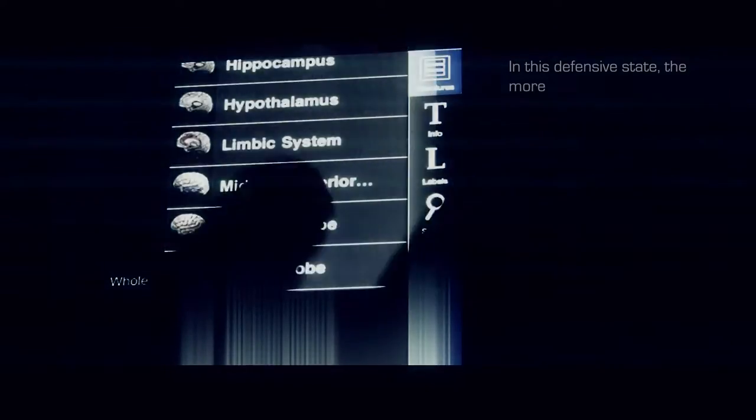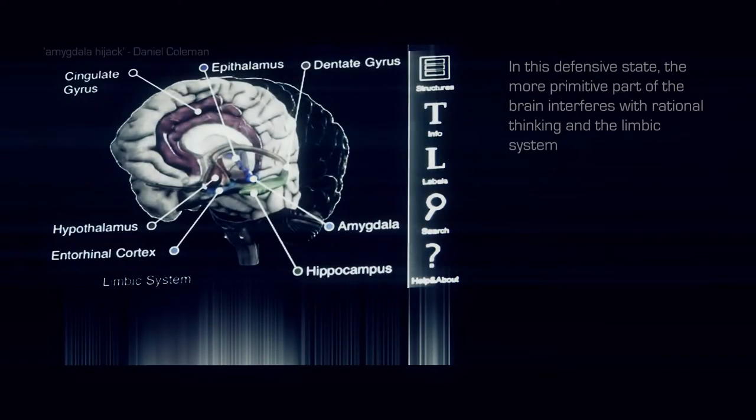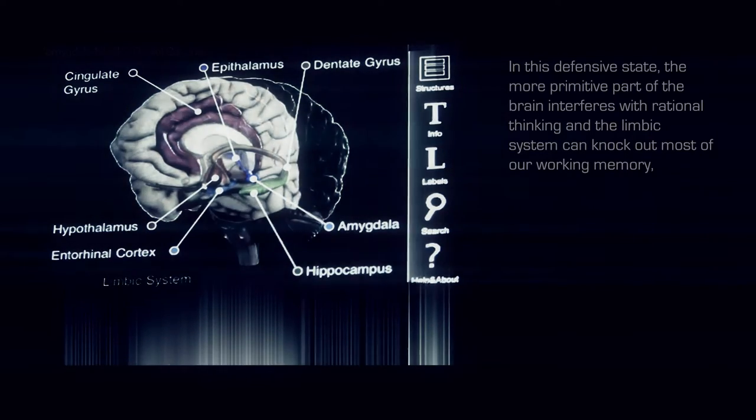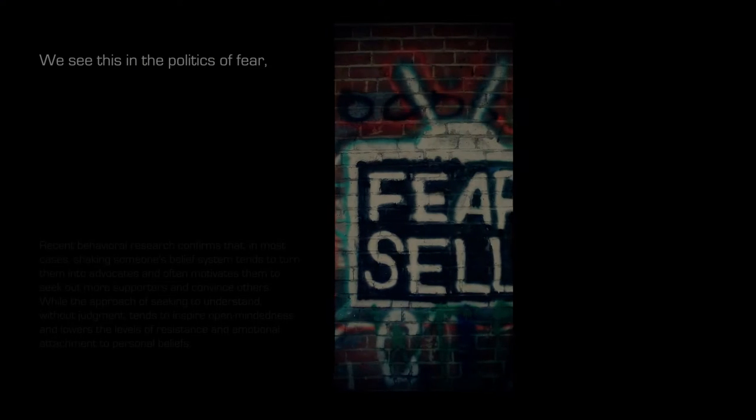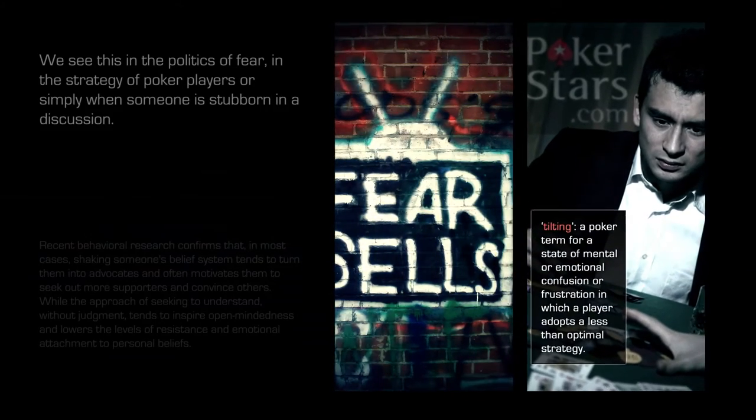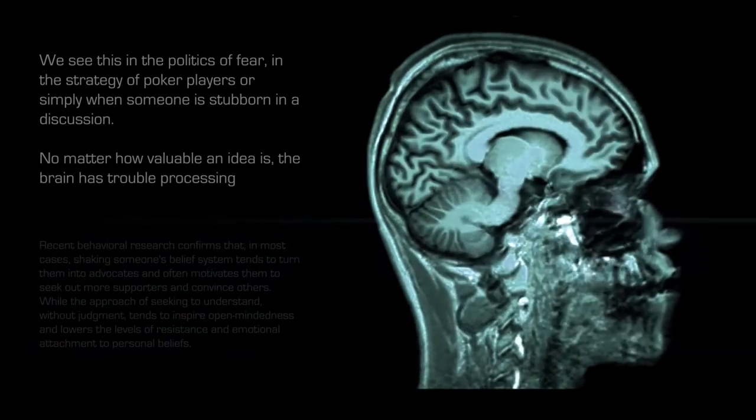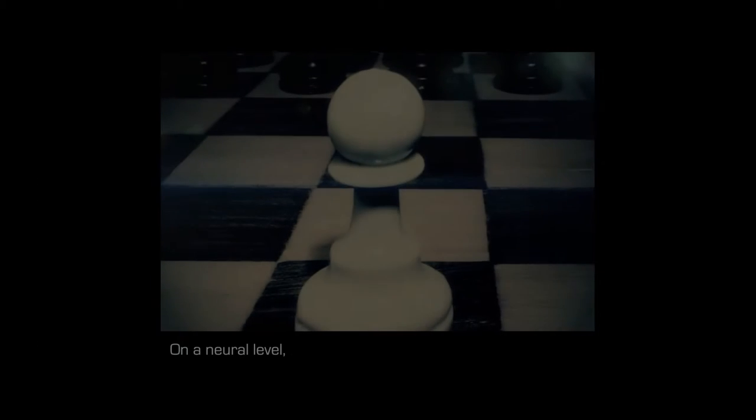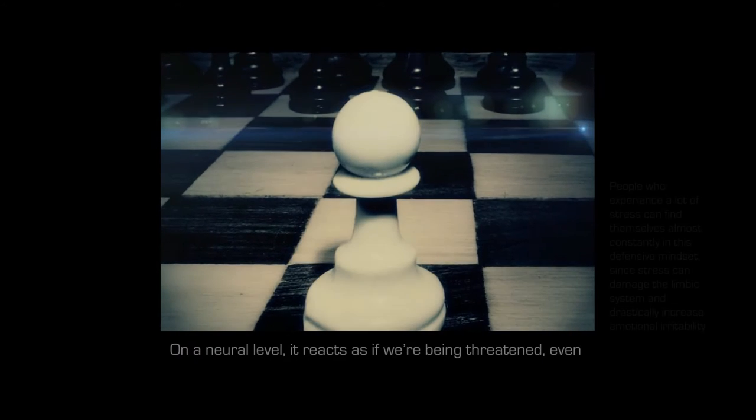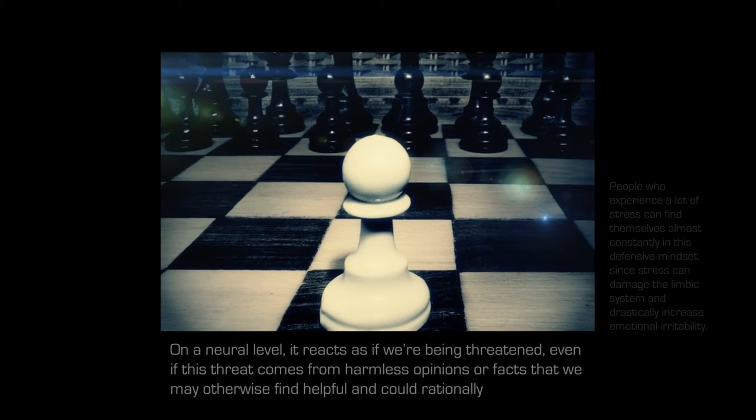In this defensive state, the more primitive part of the brain interferes with rational thinking, and the limbic system can knock out most of our working memory, physically causing narrow-mindedness. We see this in the politics of fear, in the strategy of poker players, or simply when someone is stubborn in a discussion. No matter how valuable an idea is, the brain has trouble processing it when it is in such a state. On a neural level, it reacts as if we are being threatened, even if this threat comes from harmless opinions or facts that we may otherwise find helpful and could rationally agree with.